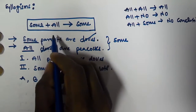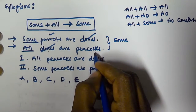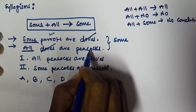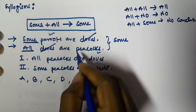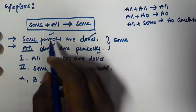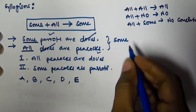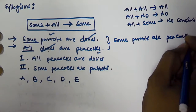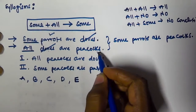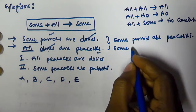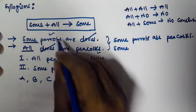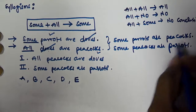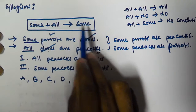Here we get 'some' as the result. The subject can be taken from the first statement or from the second statement's predicate — either parrots or peacocks. Taking parrots as the subject gives us: some parrots are peacocks. Taking peacocks as the subject gives us: some peacocks are parrots.